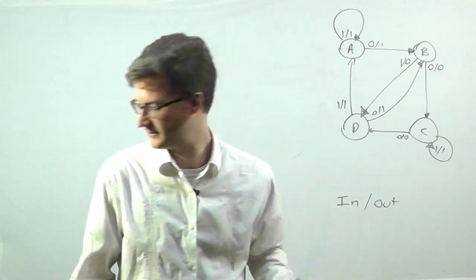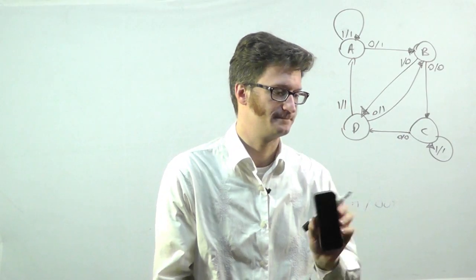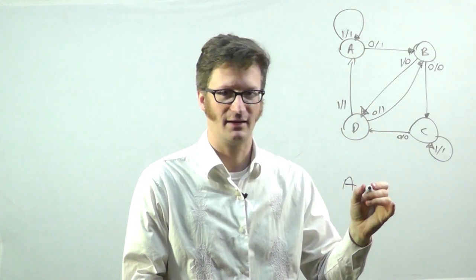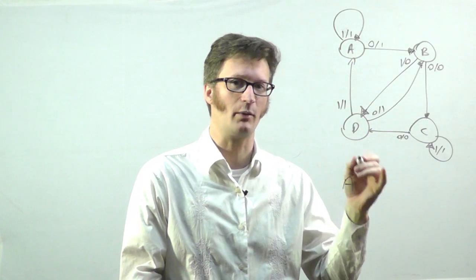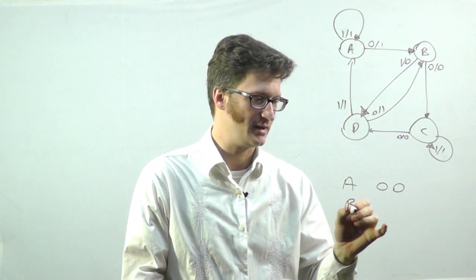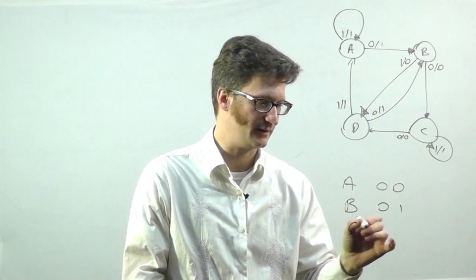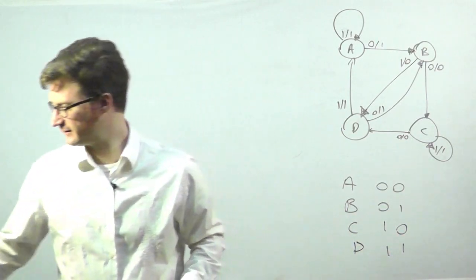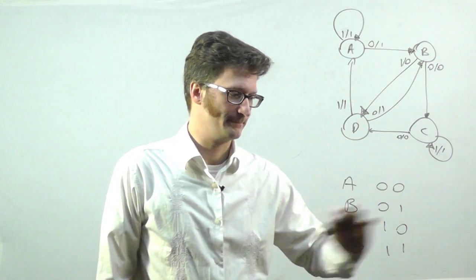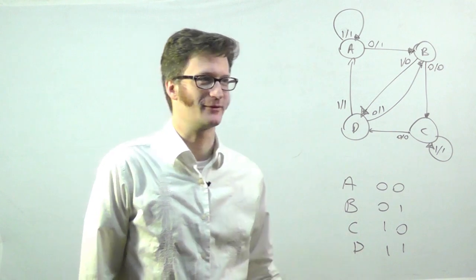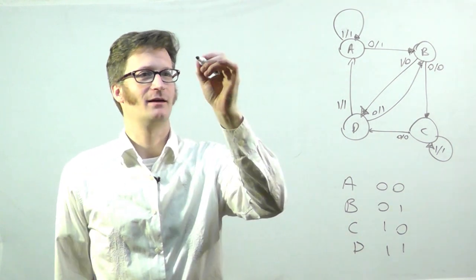All right. And I'm going to have the A is going to be represented by the value of the Q outputs on those flip-flops being 0, 0. B is 0, 1. C is 1, 0. And D is 1, 1. Okay. So this is our little secret decoder pin, whatever.